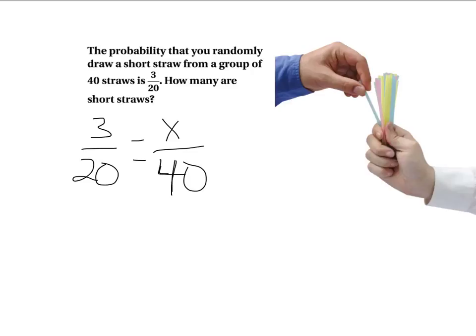Obviously, we've cross-multiplied. We've learned how to do this. I'm going to look and see that 20 times 2 gets to be 40, so I'm going to multiply 3 times 2, and I'm going to get 6. So there are 6 short straws in that group.